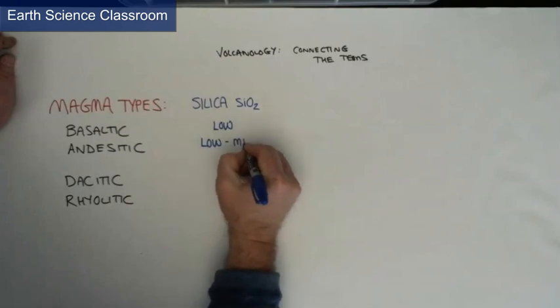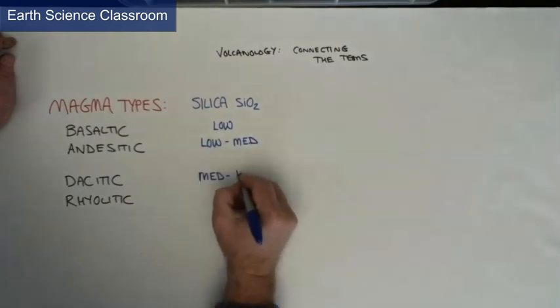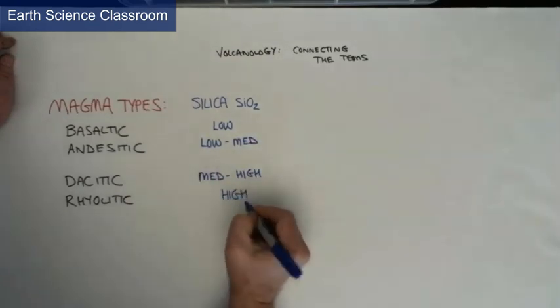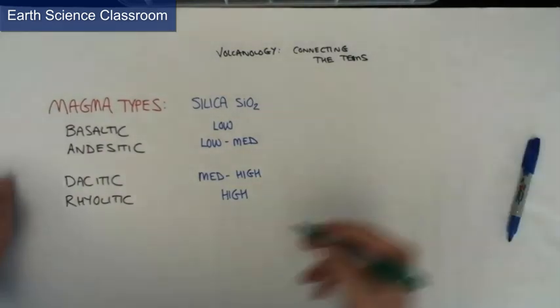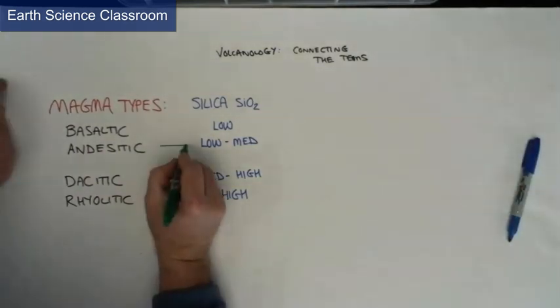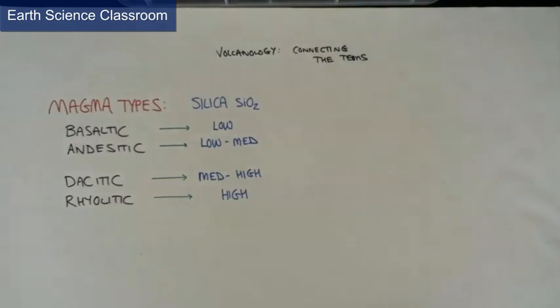We have the magma types which is basaltic, andesitic, dacitic, and rhyolitic. They are based on basaltic being the runniest with lower silica up to rhyolitic which is the highest silica around 70% weight.